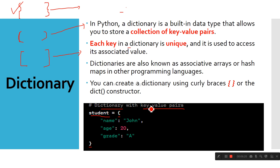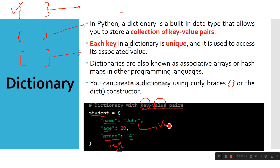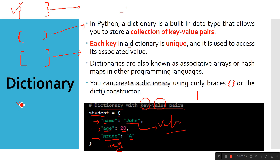The concept here is key and values. For example: name is my key, 'John' is my value; age is my key, 20 is my value; grade is my key with its associated value. So key-value pairs are stored together here. You can also create an empty dictionary with just curly braces, like x equal to empty curly braces — but right now we don't require that.